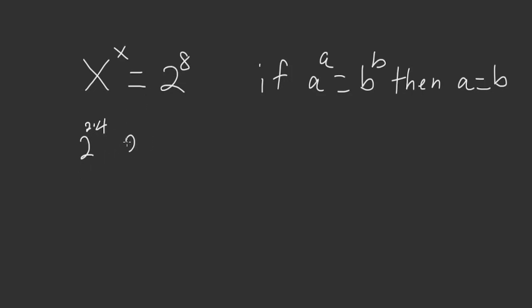This is equal to 2 squared to the 4th, which is also equal to 4 to the 4. Now that we have a number to itself, we have a to the a is equal to b to the b. So that means x here is equal to 4.